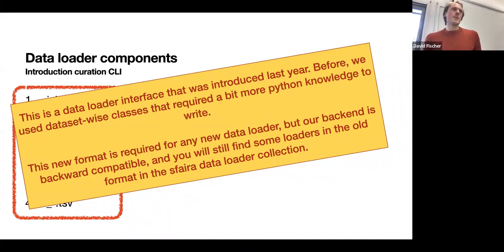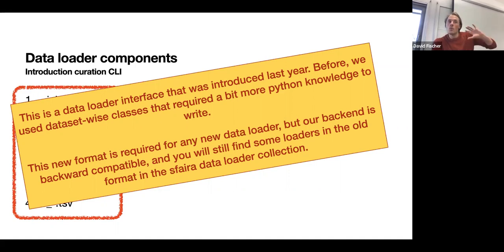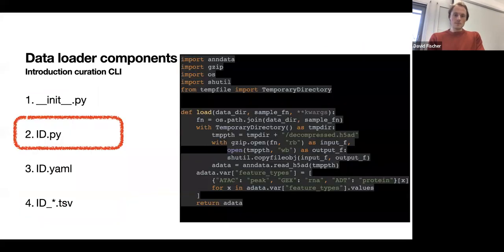If you attended the Sphira workshop last year, you'll notice what we introduce now — .py, .yaml, and .tsv — is simplified compared to last year's Python class-based structure. We broke that down so the code you write is similar to scripting in a Jupyter notebook cell. We still support the class-based loaders for backwards compatibility, but we're pushing this new version because it's much easier, especially for people just starting out.